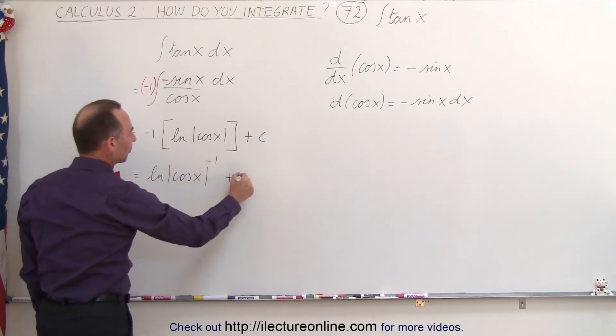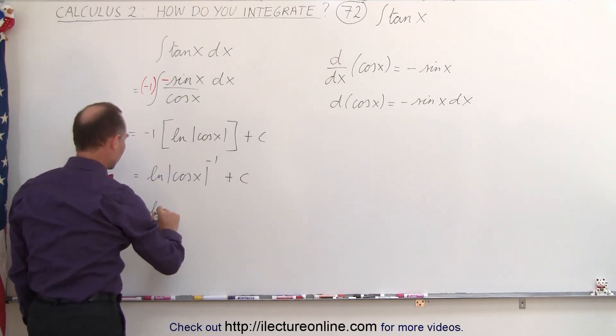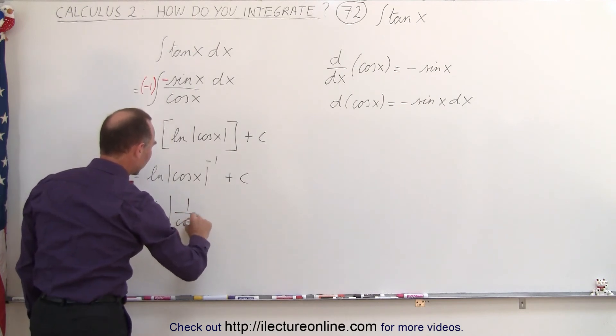which basically gives you the inverse of that. So this becomes the natural log of 1 over the cosine of x plus a constant of integration.